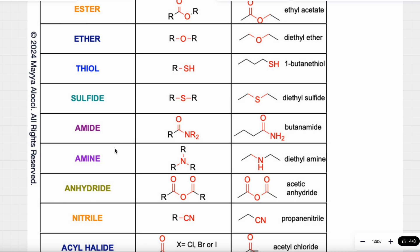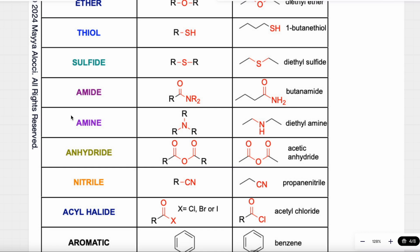Amide and amine are really important functional groups. An amide is when we have a C double bond O attached to a nitrogen that's attached to either hydrogens or carbons. Here I see C double bond O attached to NH2 — this functional group is an amide. This example is butanamide. An amine is when nitrogen is attached to either carbons or hydrogens — attached to three R groups. For example, this molecule with nitrogen attached to carbons is called diethylamine.